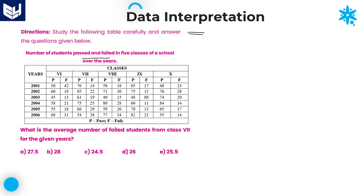Number of students passed and failed in 5 classes of a school over the years. Here, 5 different classes are there: class 6, class 7, class 8, class 9 and class 10, and the years are 2001 to 2006. P indicates number of passed students and F indicates number of failed students. That is the information given in the table.